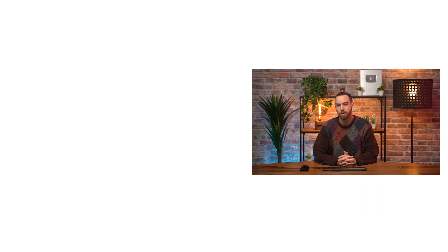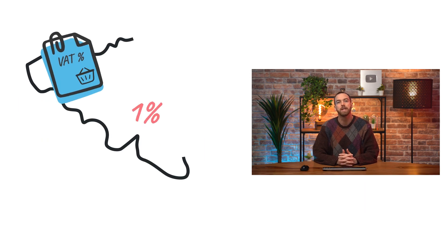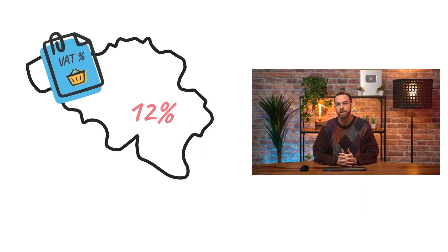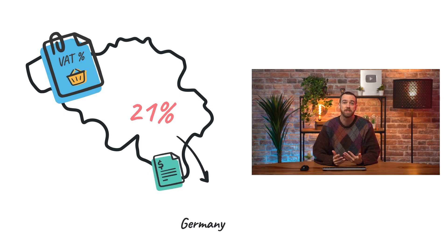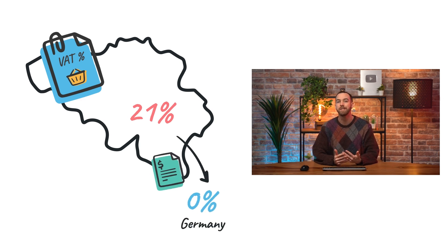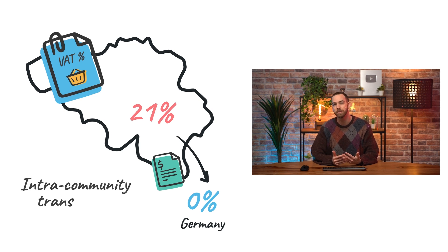Let's take a specific example. In Belgium, we apply a standard 21% VAT rate. But if we sell to a business in another European member state, we need to apply a 0% tax rate instead. This is called an intra-community transaction.